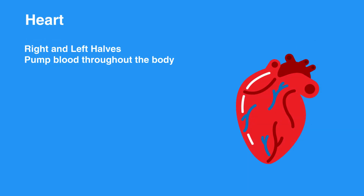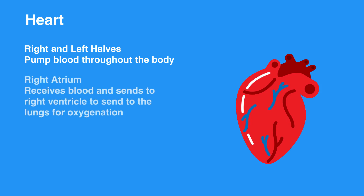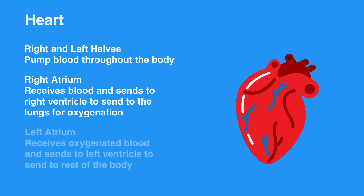The right and the left halves of the heart work together to pump blood throughout the body. The right atrium receives blood from the body and sends it to the right ventricle to be sent to the lungs for oxygenation. The left atrium receives the newly oxygenated blood and sends it to the left ventricle to be sent throughout the rest of the body.